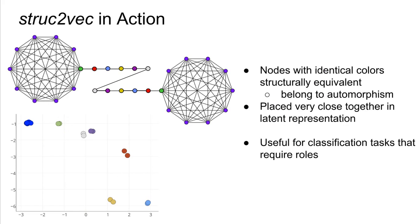Here's an example of Struct2Vec in action. Nodes with identical colors in this little graph are actually structurally equivalent. And note that Struct2Vec places them very close together in their latent representation. You see, all the blue nodes here are together, even if they are quite far apart in the network. This kind of latent representation is quite useful for classification tasks that require knowing the roles of the nodes.